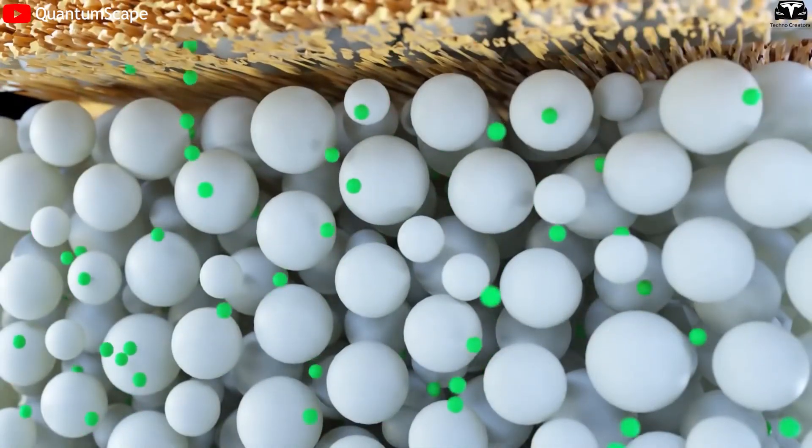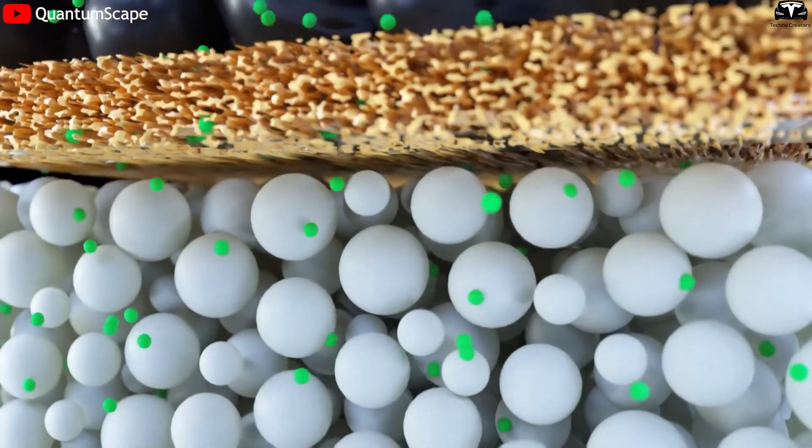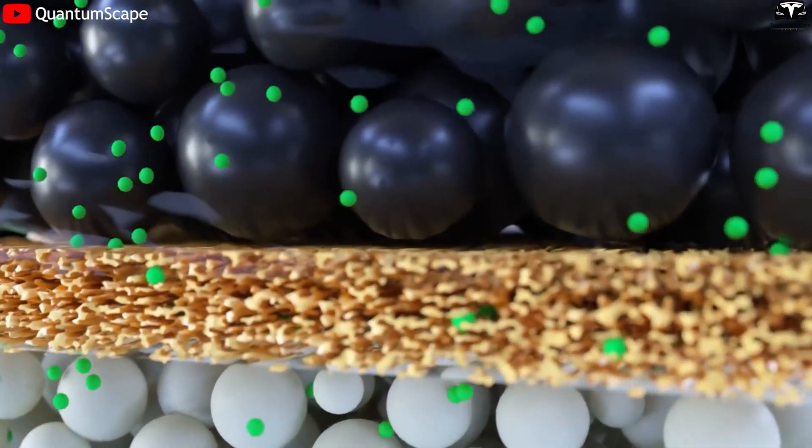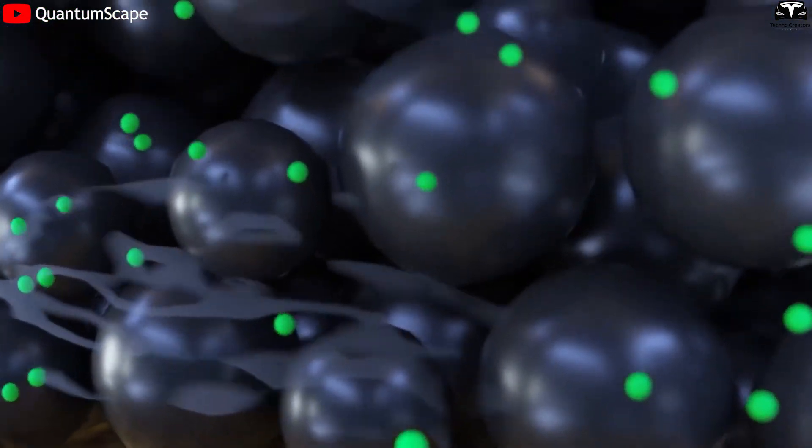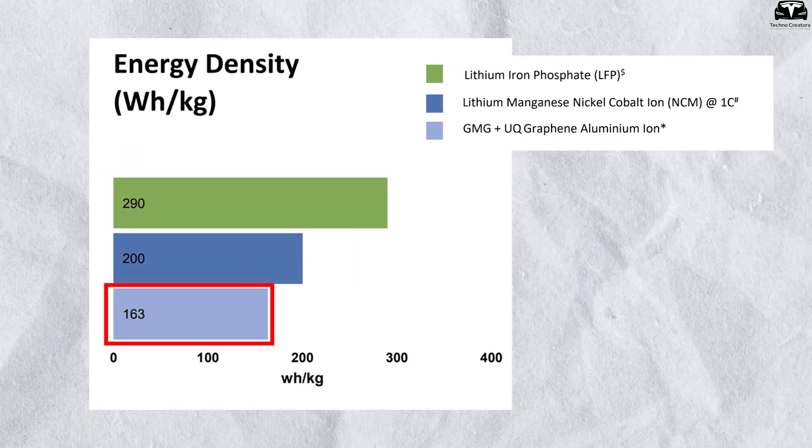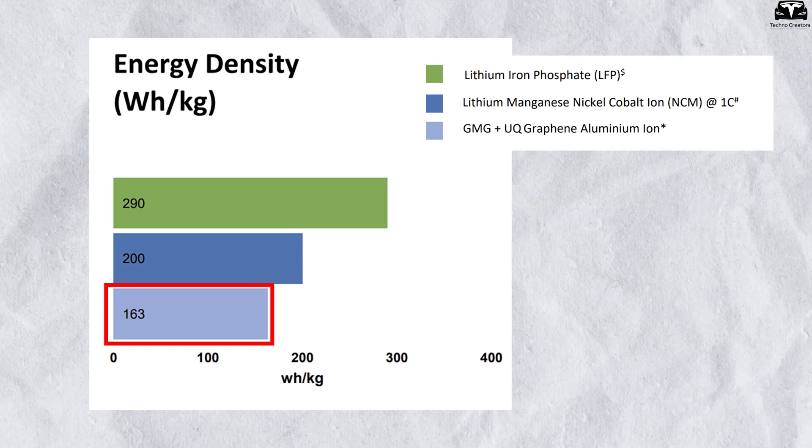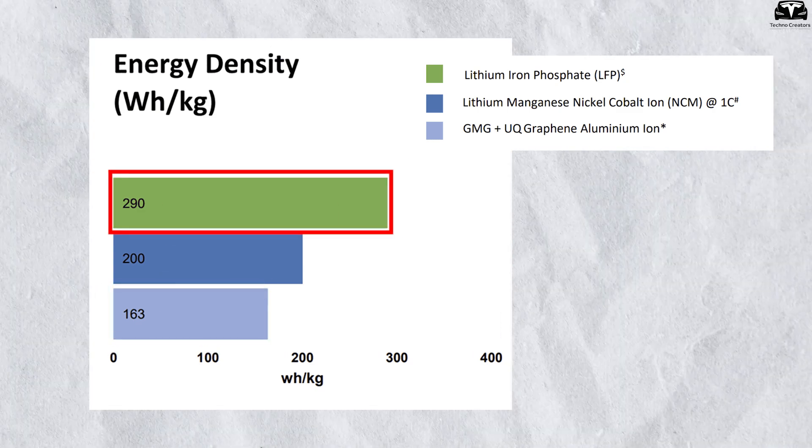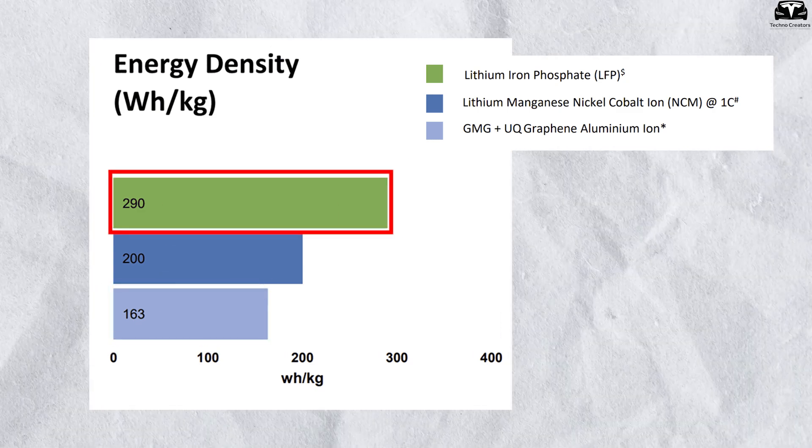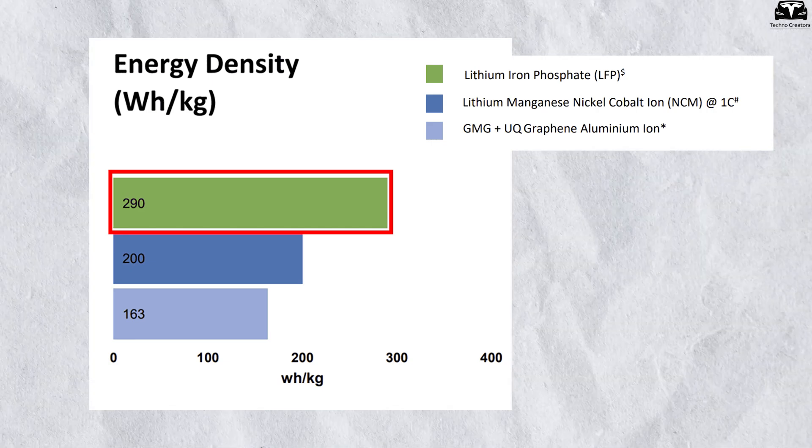However, at present, the energy density of G-plus AI batteries remains lower than that of premium lithium batteries. Current data shows G-plus AI batteries at about 150 to 160 watt-hours per kilogram, whereas Tesla's 2170 cells reach up to 260 watt-hours per kilogram.